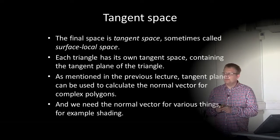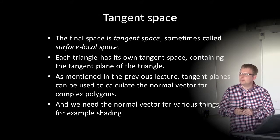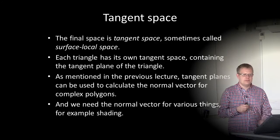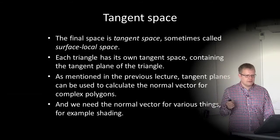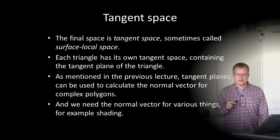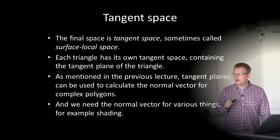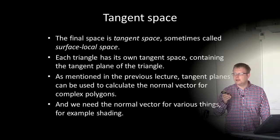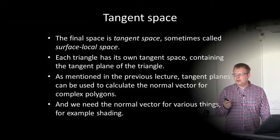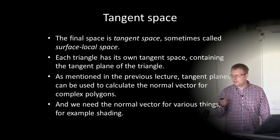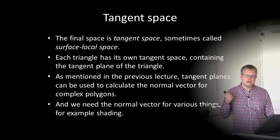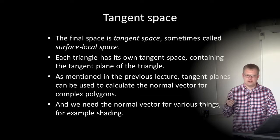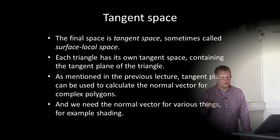The final space is called tangent space, sometimes called surface local space. As discussed in the previous lecture, each triangle has its own tangent space containing the tangent plane of the triangle. From the tangent plane we can calculate the normal vectors for each triangle, which we need for lighting calculations — for example, calculating shading and lights — but also for calculating collisions.